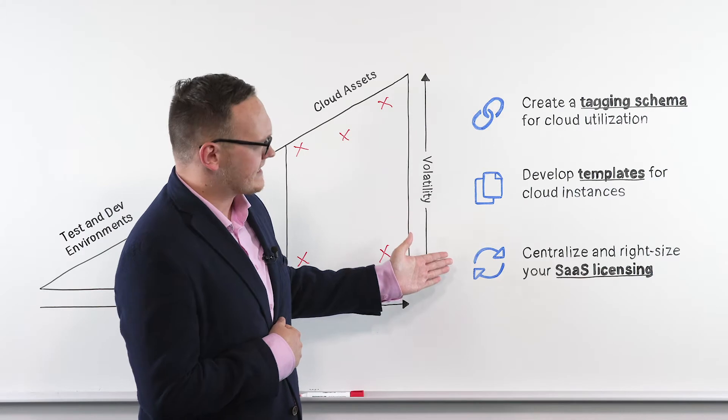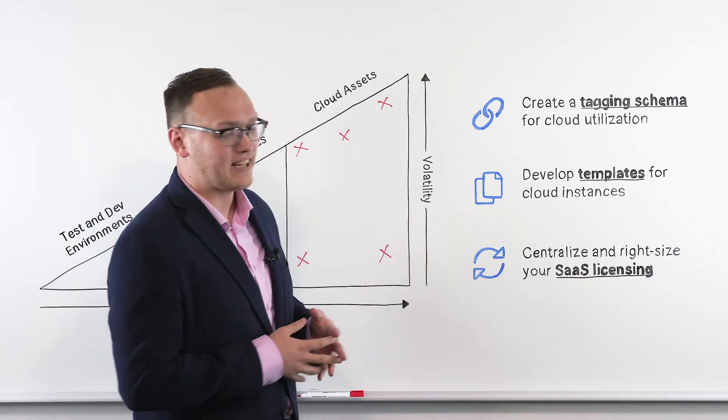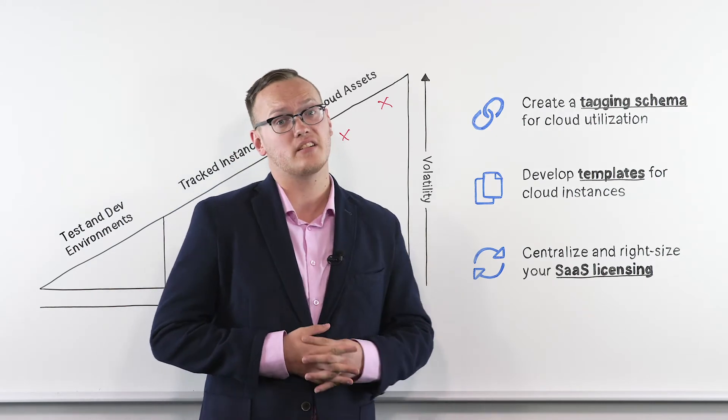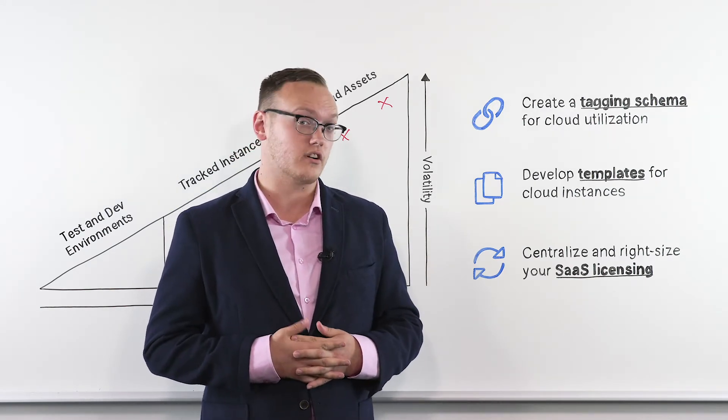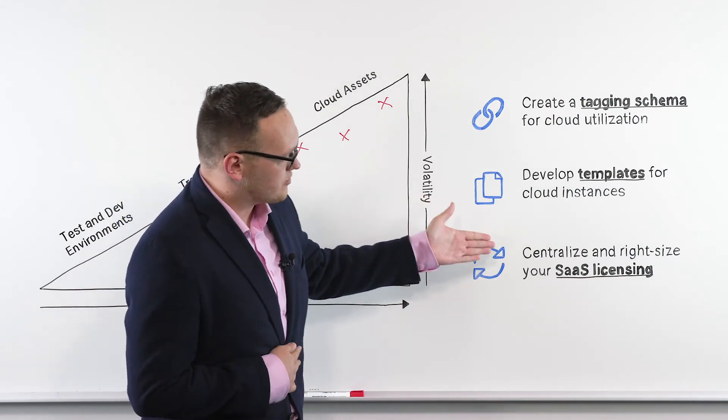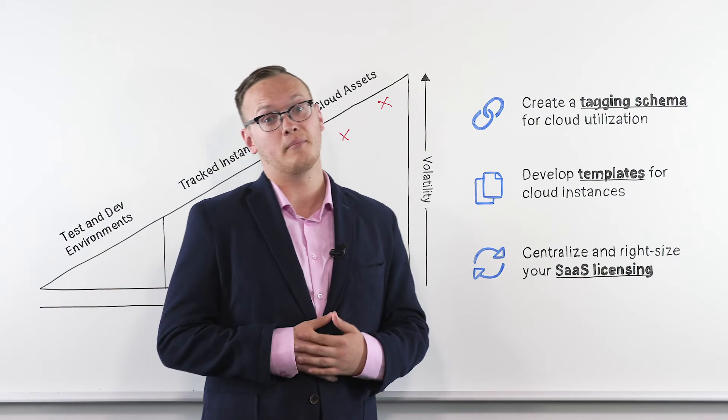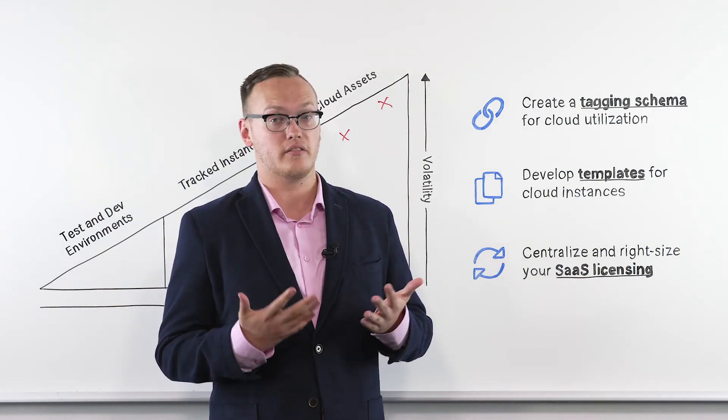The last item is to centralize and right-size your SaaS licensing. Many of our clients are over-licensed for Office 365 and for other cloud productivity suites. And unless you centralize your SaaS products, you won't be able to right-size them because you won't know that you have them in the first place.